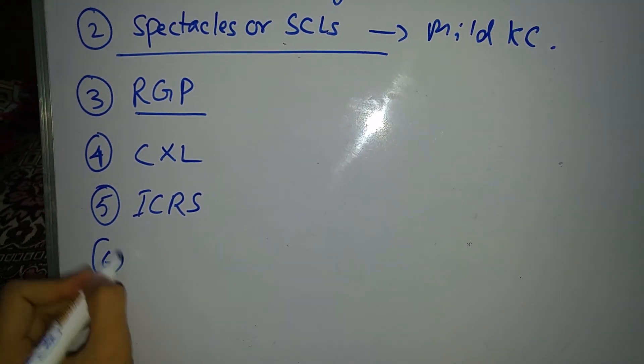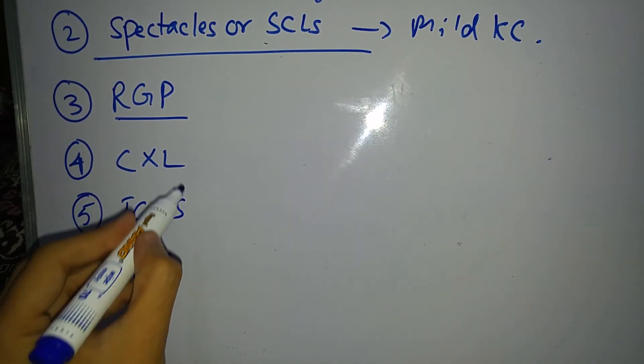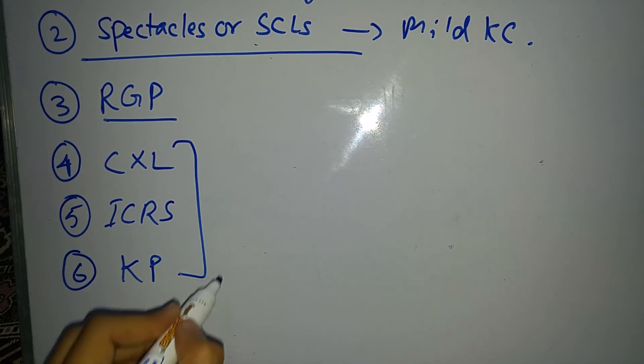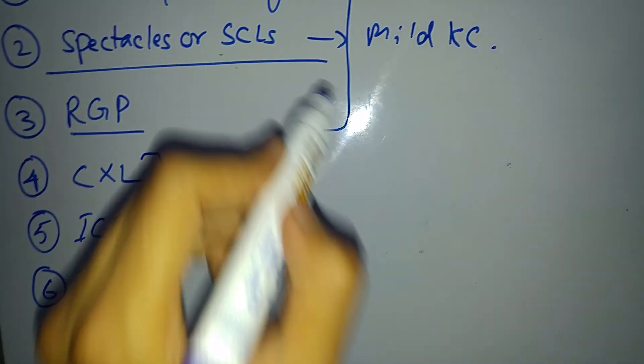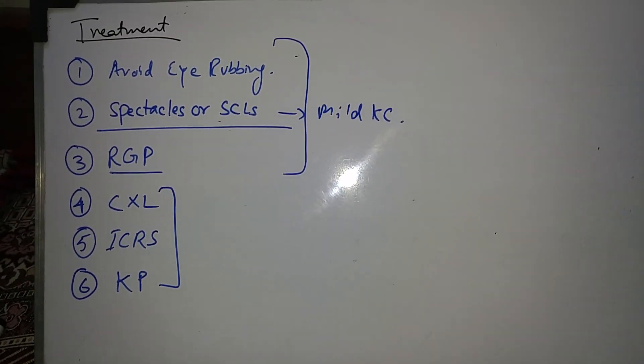And number six is keratoplasty. These are the surgical procedures, and these are the non-surgical procedures for the treatment of keratoconus.